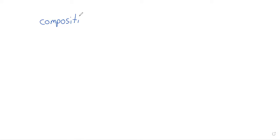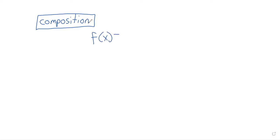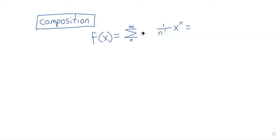But we can do composition, and this is important. We actually saw an example of this yesterday. I gave you a power series — the sum from zero to infinity of one over n factorial times x to the nth power. Wait, no, I didn't have that term. Everything was positive.